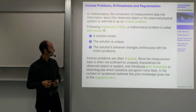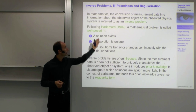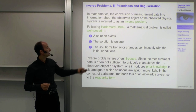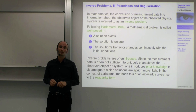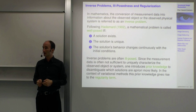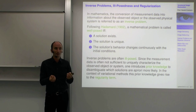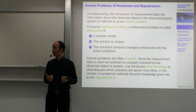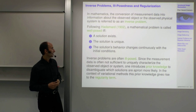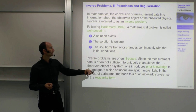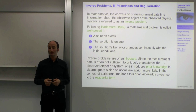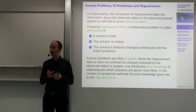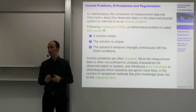In practice, most inverse problems are actually ill-posed — they don't fulfill all three conditions. For example, the measurement data is typically not sufficient to uniquely characterize the observed object or system, so the uniqueness property is typically not fulfilled. There are often multiple solutions and certain ambiguity about which one is right. Multiple solutions match the observations equally well, and so to disambiguate, one typically introduces some kind of prior knowledge.